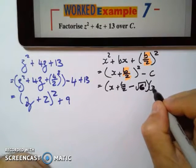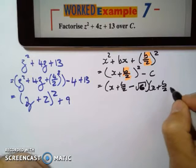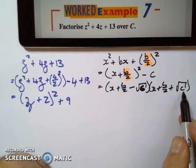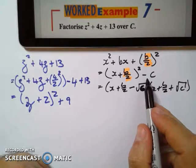x plus b over 2 plus square root c. Because square root c times square root c will be negative c.